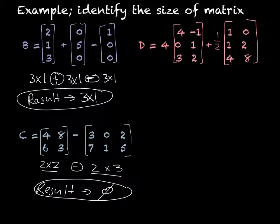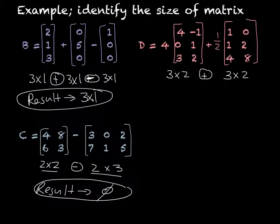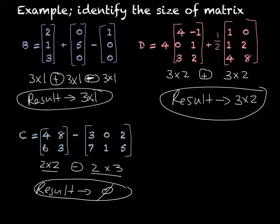In this next example, we are given a constant multiplied by a matrix, which is going to be the same as the original matrix, which is three rows by two columns, and then we're trying to add that to a constant multiplied by a matrix, which again will result in its original matrix, which is also three by two. So three by two plus three by two is going to result in a three by two matrix, because they're both the same and we're adding them.